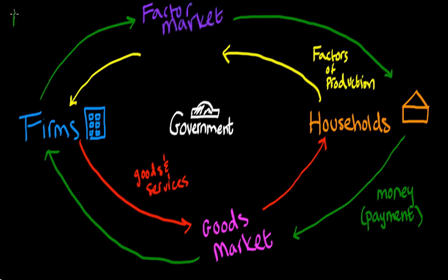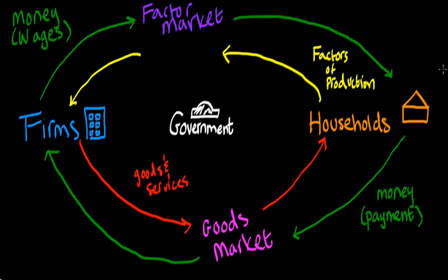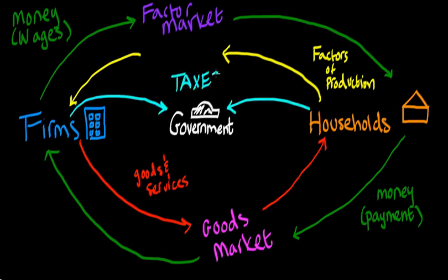And the firms pay the households back in the form of wages. So you see, the money goes from the households to the firms in the form of payments for goods, and goes from the firms to the households in the form of wages. The government gets money from both groups in the form of taxes — income taxes and sales taxes.